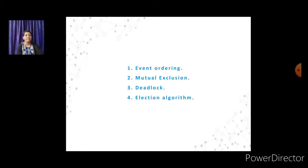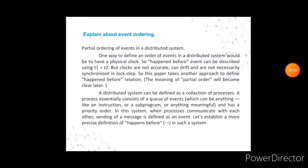First, let us see what is event ordering. A system of clocks that ensures you can always tell the order of two events in the system. When two events cannot influence each other through messages, they are considered concurrent despite their ordering in physical time. We can use timestamps to order all events in the system using an arbitrary ordering when timestamps are ambiguous. It is important to note that while the partial ordering is unique, the total ordering of events depends on clock choice and the arbitrary ordering of events when no causal link exists.